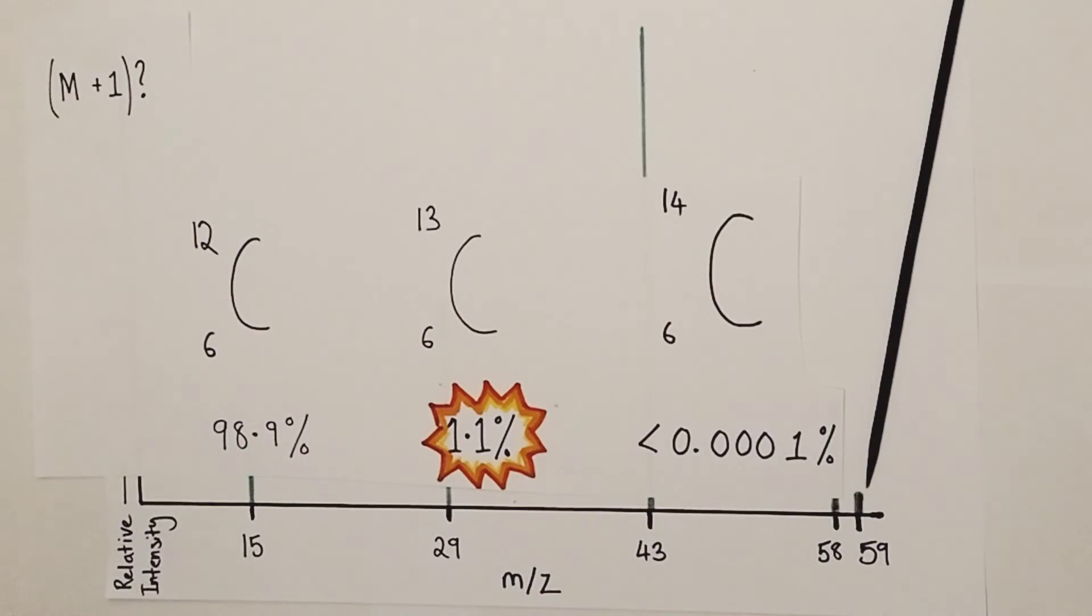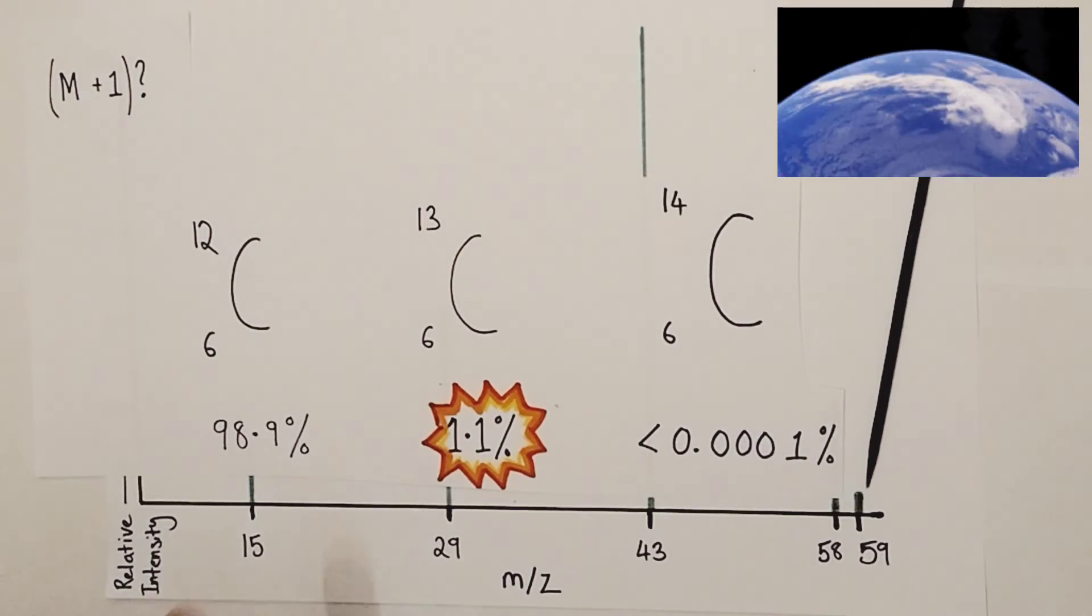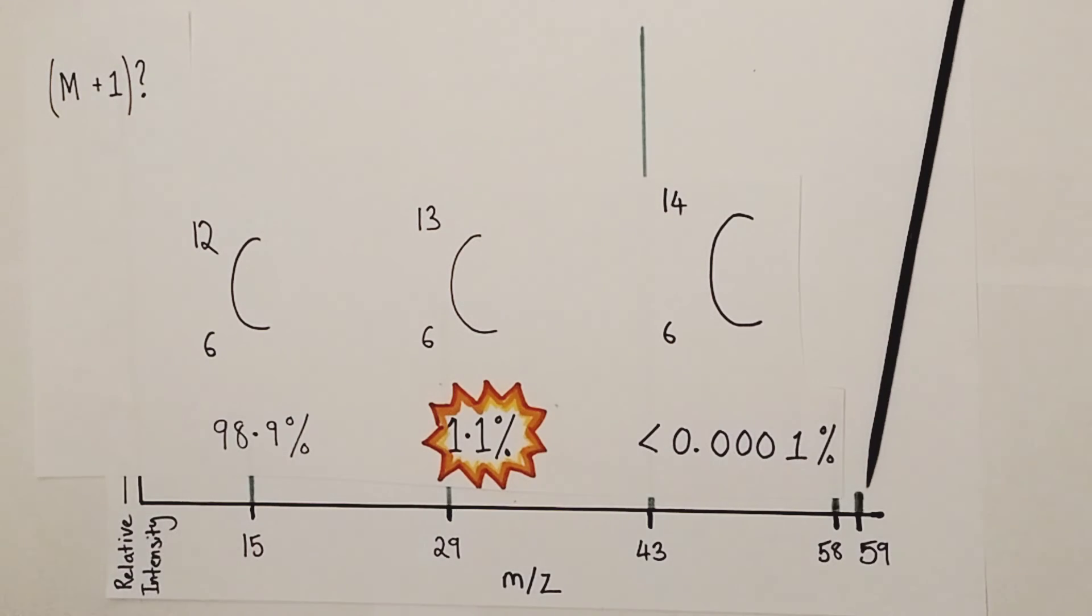So on any mass spectrum if you find a tiny peak one mass charge ratio value greater than your molecular ion peak you've already worked out that is being caused by the presence of carbon isotopes. In terms of the natural abundances of carbon atoms found here on planet earth, 98.9% of all the carbon atoms you will find will be carbon-12, their nucleus will contain six protons and six neutrons. But around about 1.1% of all the carbon atoms found on planet earth are carbon-13 with six protons and seven neutrons found in their nucleus.